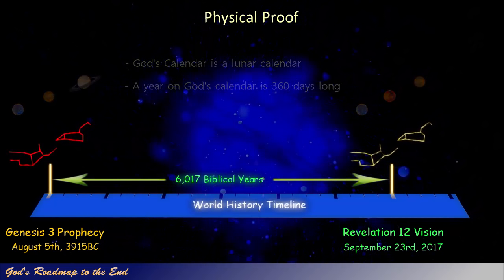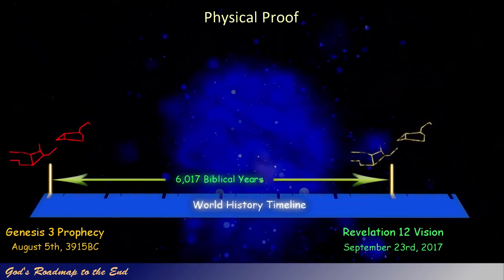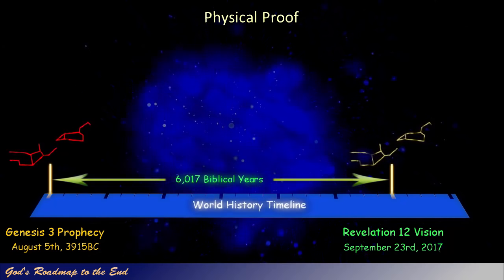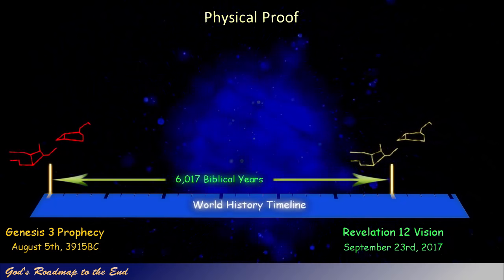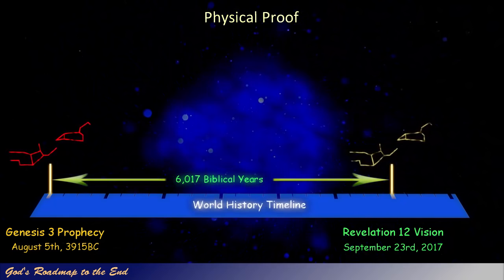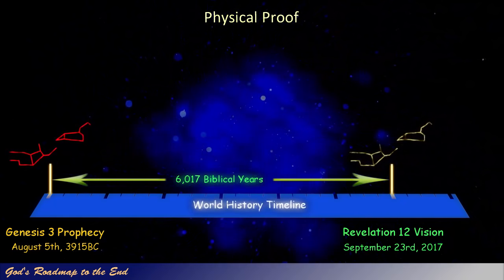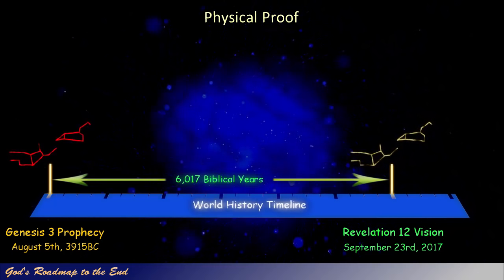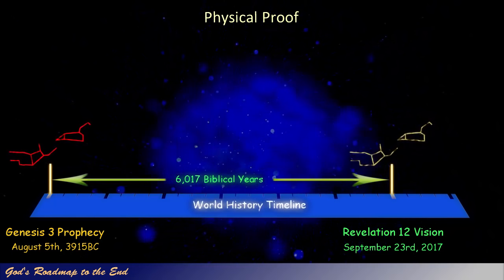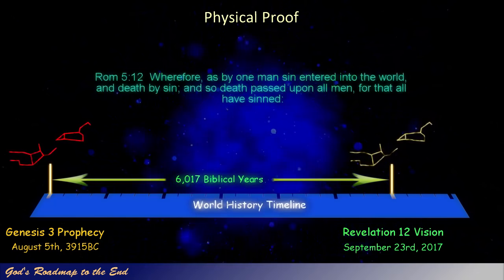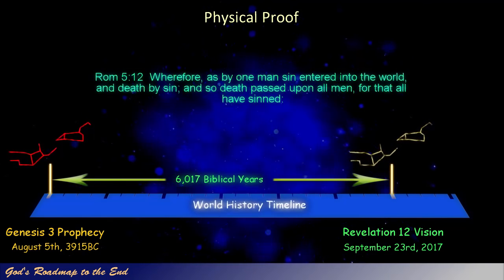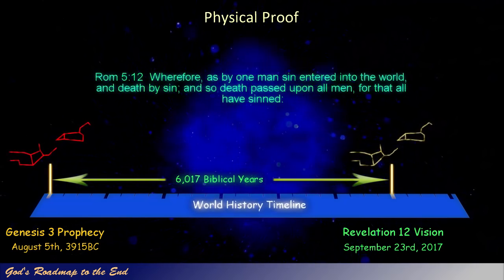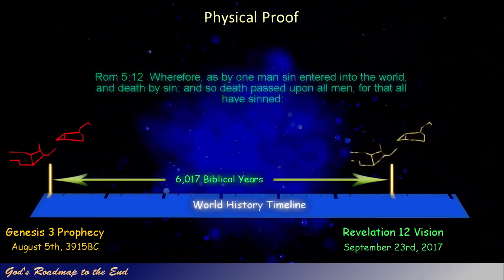We now have two points on this timeline approximately 6,000 years apart, describing the time between the prophecy and the vision that Daniel was told to seal up, marking two very important events in the history of man on earth. We know that at the point that the prophecy was given, sin entered the world and death by sin, as seen in Romans 5 verse 12: 'Wherefore, as by one man sin entered into the world, and death by sin, and so death passed upon all men, for that all have sinned.'